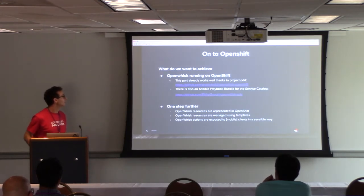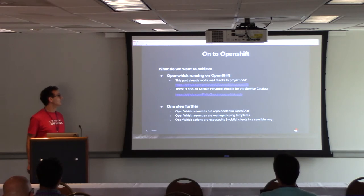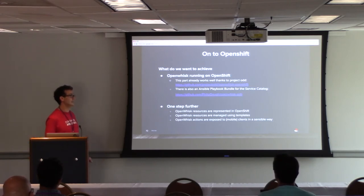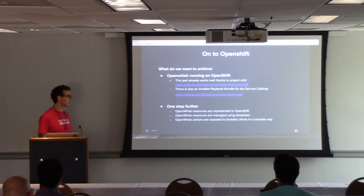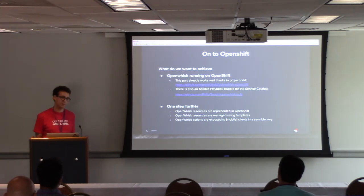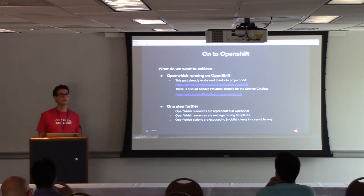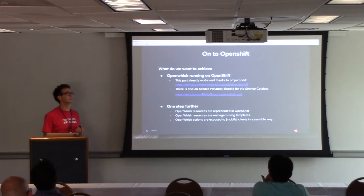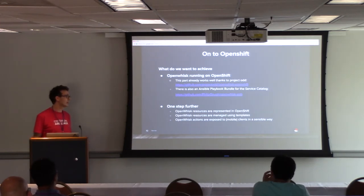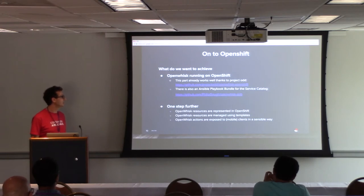So what do we want to achieve with OpenShift? We want to run OpenWhisk on OpenShift. There is Project ODD, which provides templates for this, making deploying OpenWhisk on OpenShift or Kubernetes pretty straightforward. There's also an Ansible Playbook Bundle you can use to deploy OpenWhisk to the service catalog and provision it via one click.